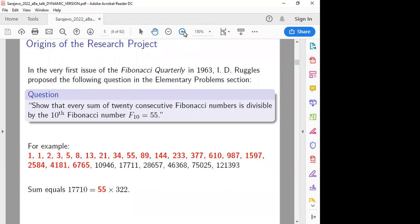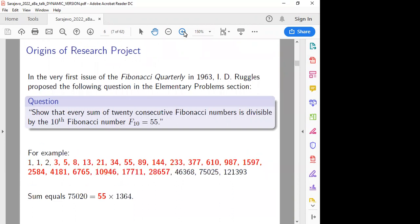Let's start at another place. How about we start at F4, and then we add up those 20 numbers, and we get 75,020. Indeed, that's 55 times something. Let's start at F6, and then we get a bigger sum, obviously, because of bigger numbers. There's 196,405, and indeed that's 55 times something.